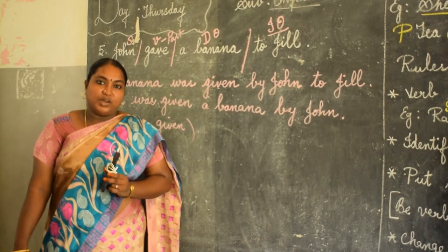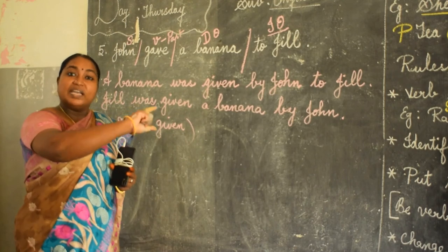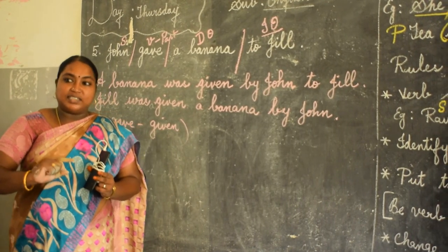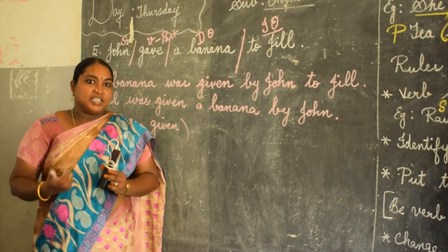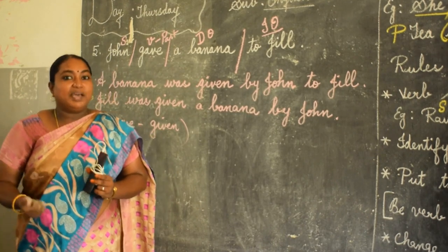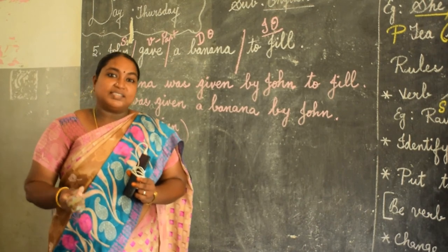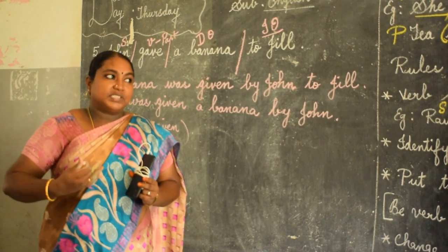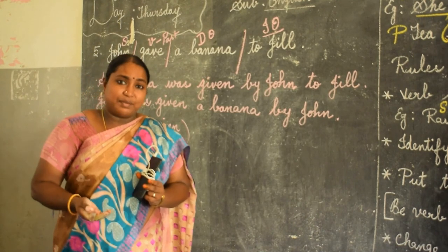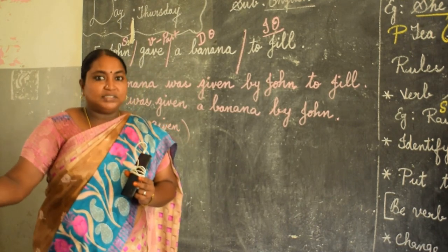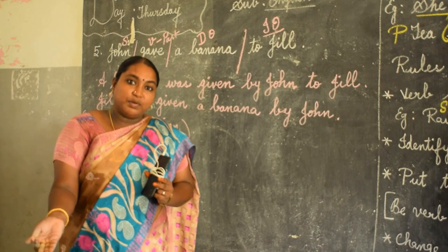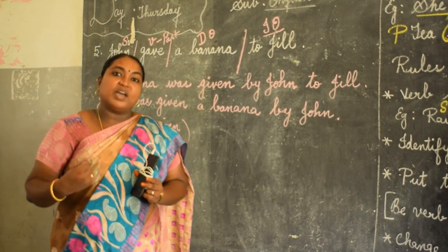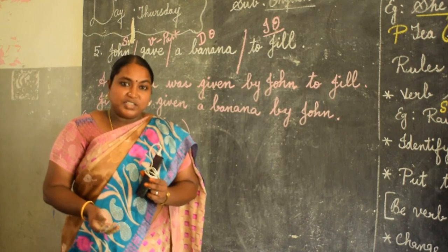I hope children that you have understood. These are all assertive sentences. We shall see interrogative sentences and imperative sentences in the next class. Your assignment is to work out more examples from your 8th and 9th standard books — collect more examples and work them out.